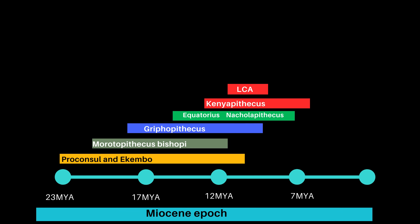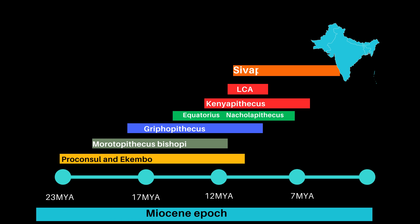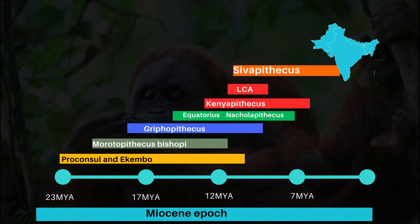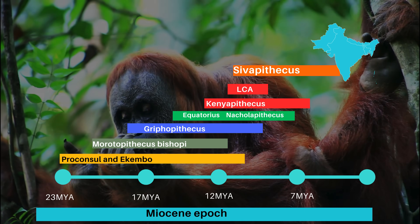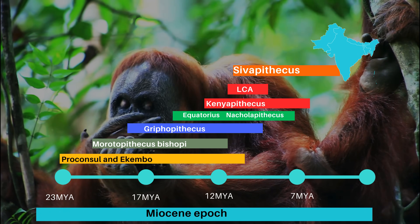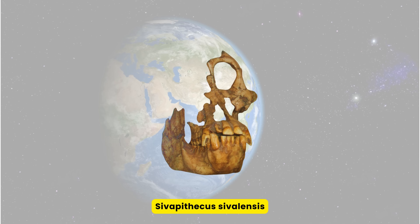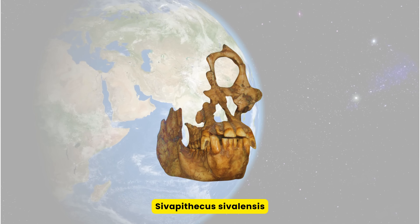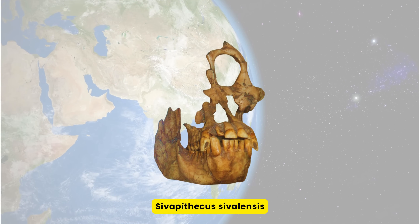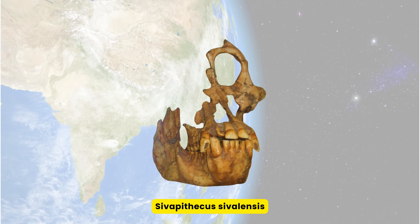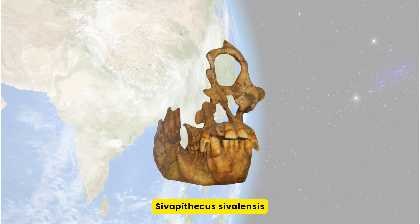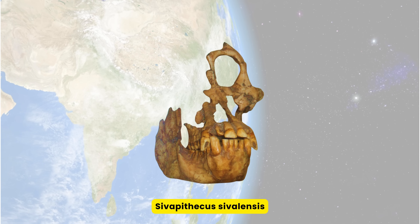Around 14 million years ago, Africa's climate became drier, and this is when molecular evidence suggests that African great apes and humans diverged from Asian great apes, or pongines. The oldest known pongines, dating back to about 12.7 million years ago, were found in India and Pakistan. These belong to the genus Sivapithecus, which shares unique features with modern orangutans, suggesting it is a fossil relative of the orangutan.